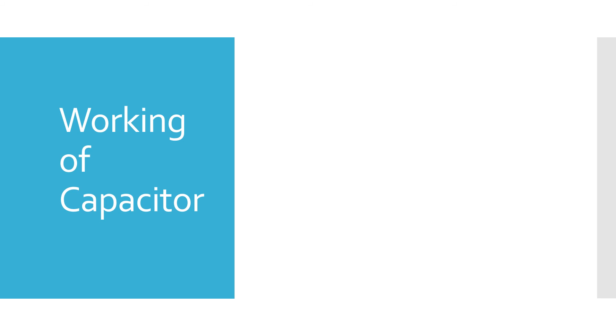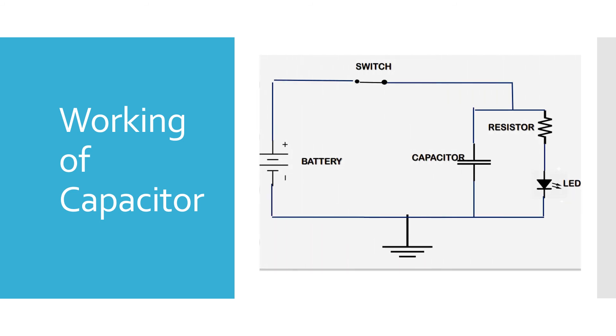Now let's see the working of capacitor. This is the diagram of the working of capacitor. There is a capacitor attached with a switch, and also a resistor is attached to the switch. The resistor is connected with the LED. The LED's negative side is connected to the battery, and the LED's positive side is connected to the switch through a resistor.